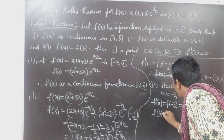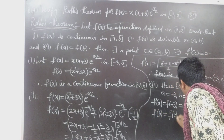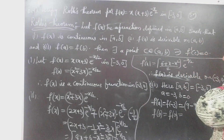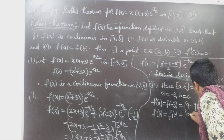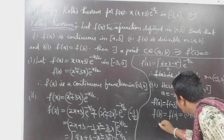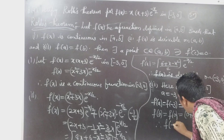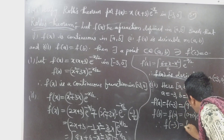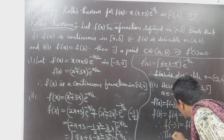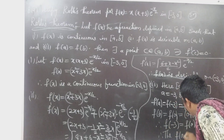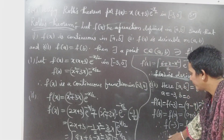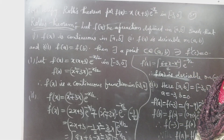And F(B) equal to F(0): this is equal to 0 into (0 + 0) into e^0, which is also 0. Therefore F(A) equal to F(B) equal to 0. The third condition is also satisfied.